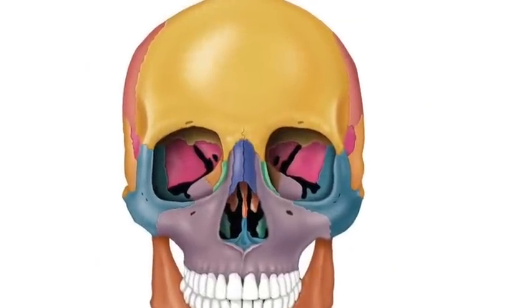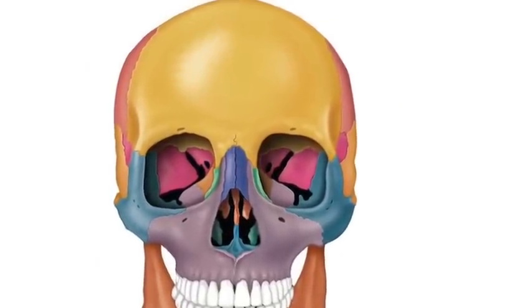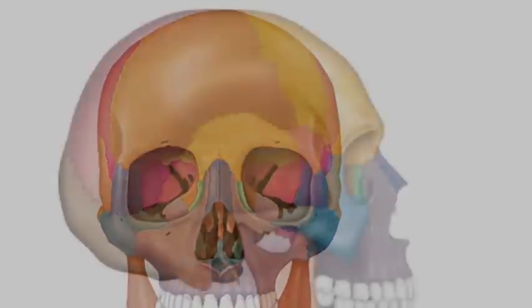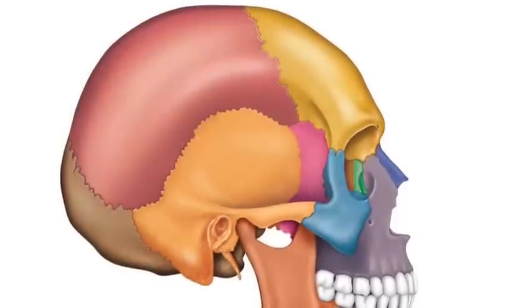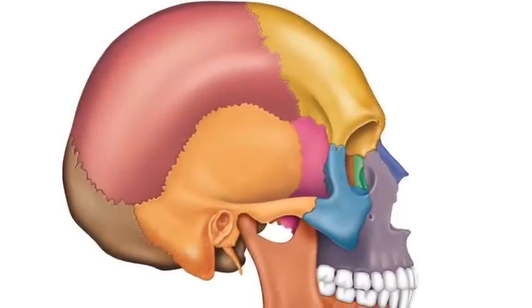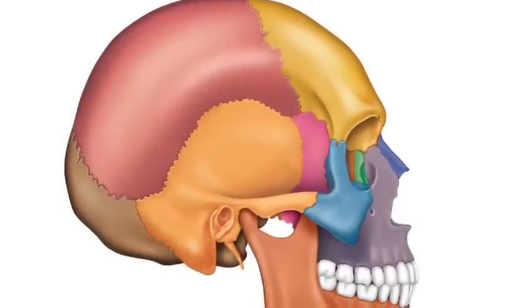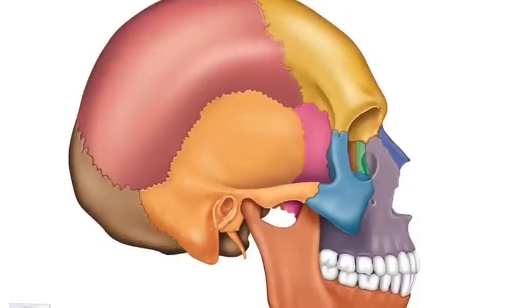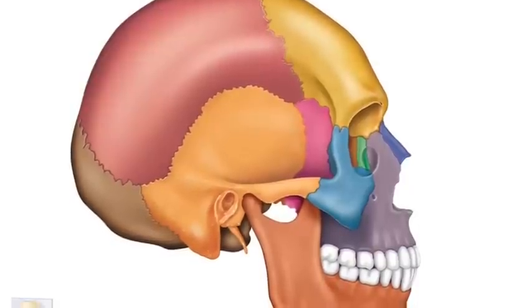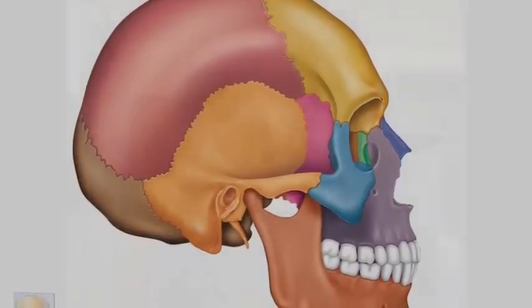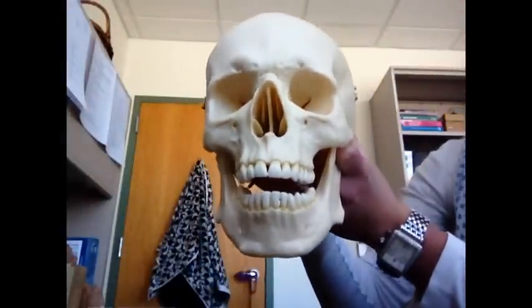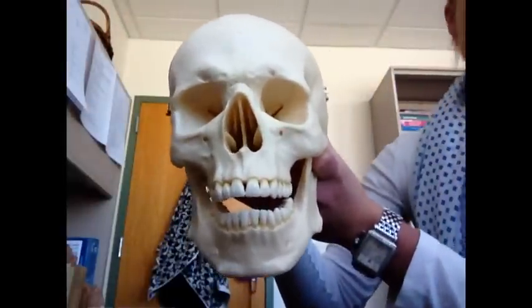I'll start by reviewing the major bones and bone markings of the skull, and this includes the cranial bones and the facial bones. This is a review of the human skull.